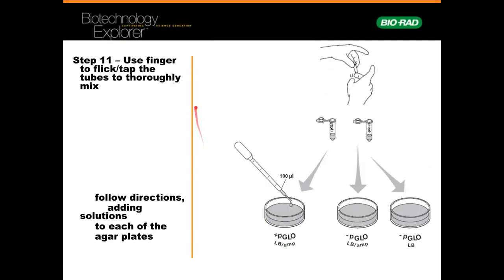Step number 11, after that 10 minutes, you're going to flick the tube to mix it. Mixing well is really important. We want to mix the plasmid, bacteria, and broth all together. Flicking is super important to get that mix. We don't want anything to settle. Then you're going to add 100 microliters from the plus p-glo to the plus p-glo LB amp. You'll need a new tip, then add 100 microliters from the minus p-glo to the minus p-glo LB amp and 100 microliters to the minus p-glo LB. Keep those sterile tips and you'll be all set.